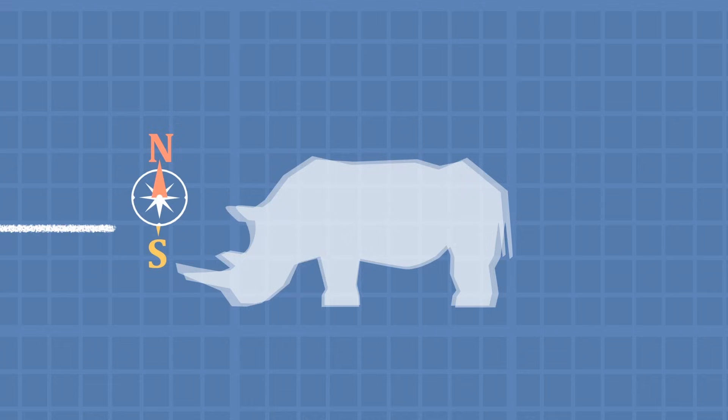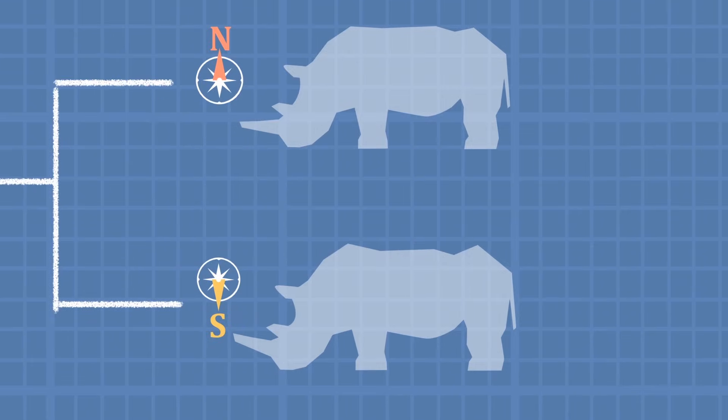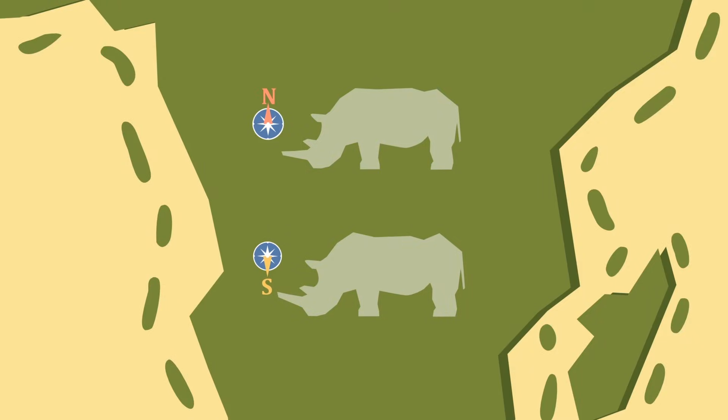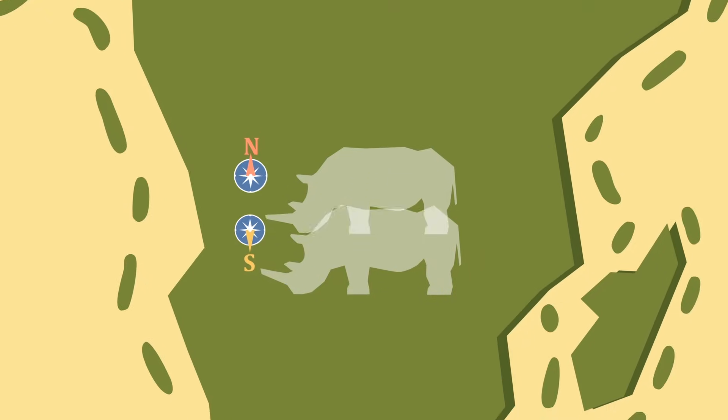Northern and southern white rhinos diverged about a million years ago into separate, though still closely related, species. They inhabit different regions and have slightly different physical traits.